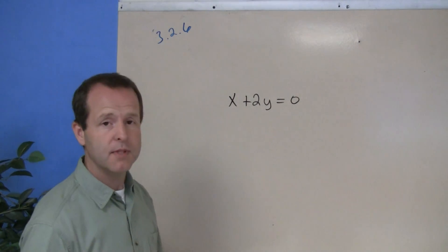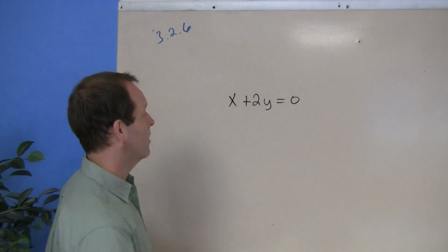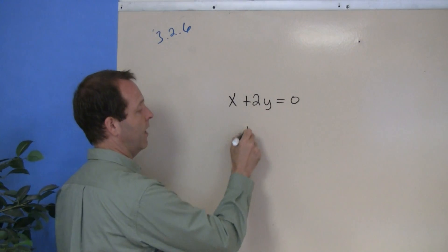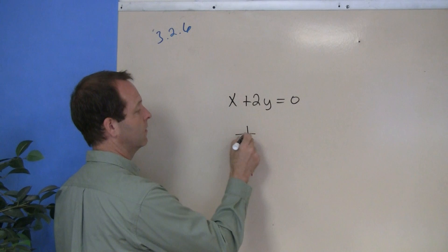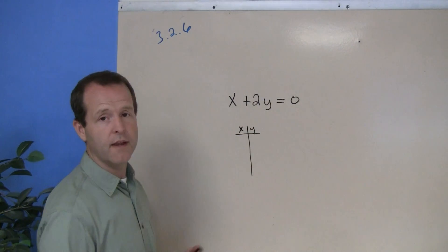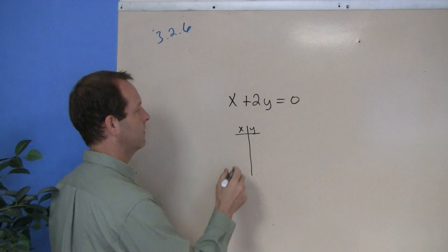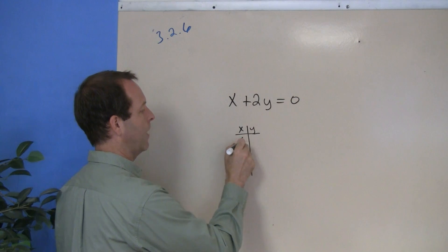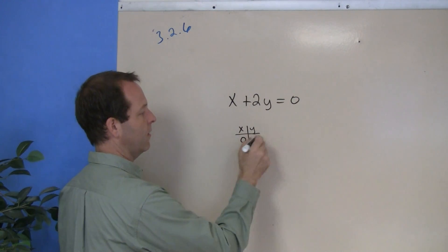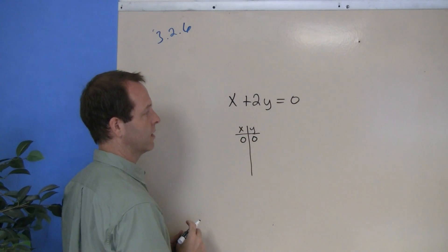In this particular case, there's no harm in going through and developing a quick little xy table and determining what are some additional points. I know that (0, 0) is part of the equation.